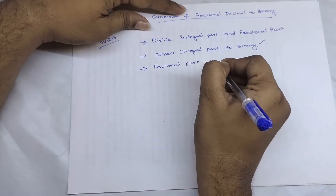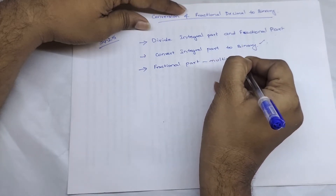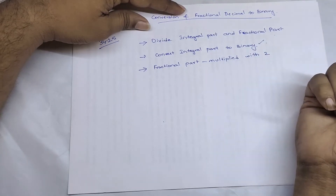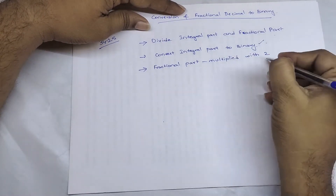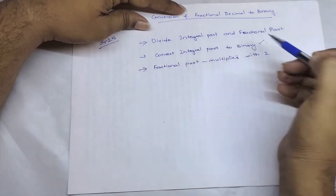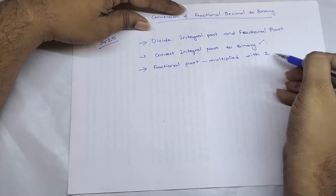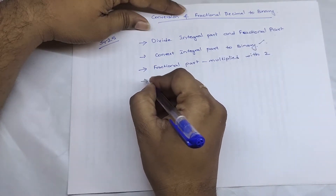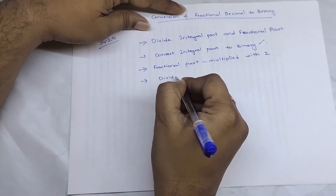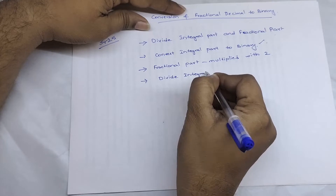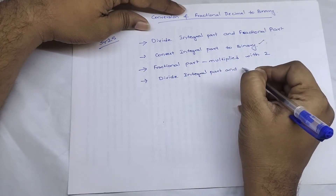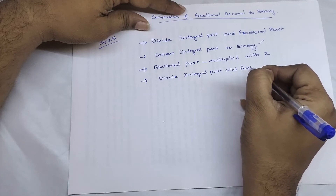The fractional part must be multiplied by two, because the base of a binary number is two — meaning either zero or one. So whatever fractional part we take from the given number, that must be multiplied by two.